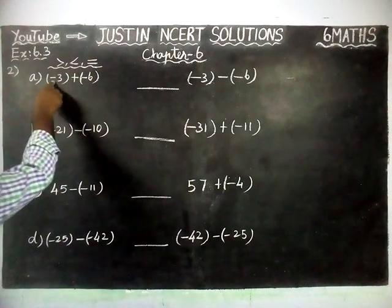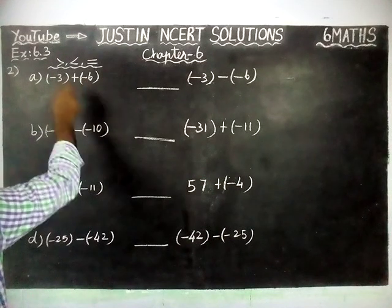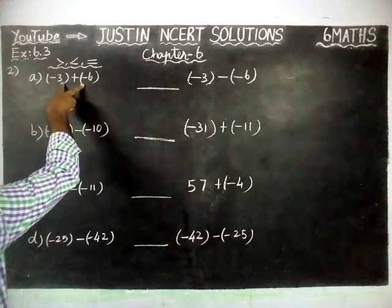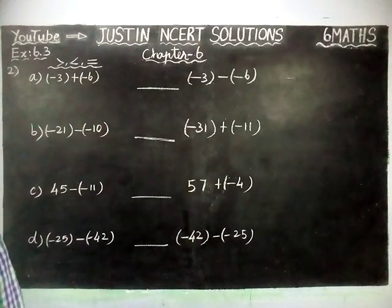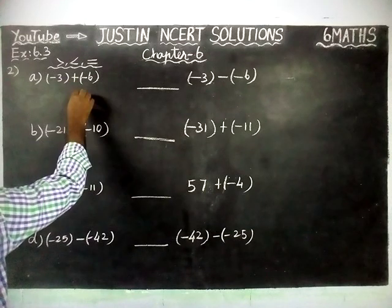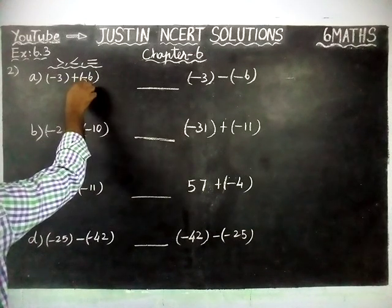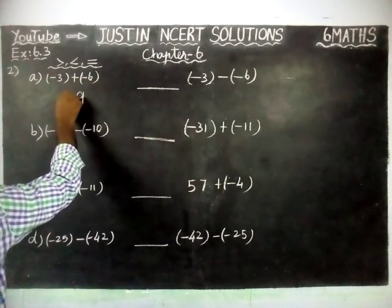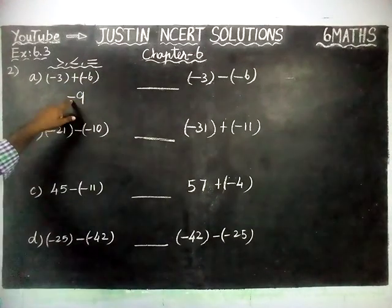Now, Part A: minus 3, minus 6. Both have the same sign, so we are going to add 3 plus 6 equal to 9, and both also have minus sign. So, the left hand side answer is minus 9.